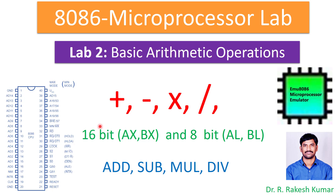We are going to use the instruction set including ADD, SUB, MUL, and DIV. These are the keywords which will be used in writing assembly language programs for the 8086 microprocessor. Before that, we will see a quick overview of the internal structure of the 8086 for a better understanding of arithmetic operations.